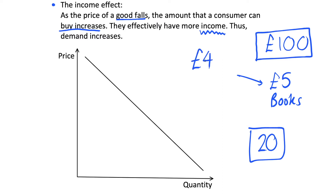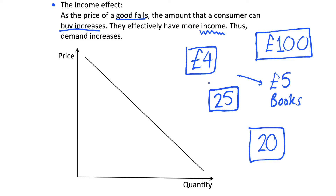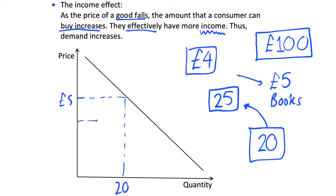Well, effectively their real income has increased. Their actual income — the amount in their bank account — hasn't changed; they still have 100 pounds. But the amount of goods that this can purchase has increased because the books have reduced to four pounds. They can now buy 25 books with the same amount of income, so they effectively have more income because their income can buy more. Their demand, because of the change in price, is going to increase from 20 to 25 — an increase in demand due to the falling price, due to an income effect.